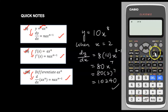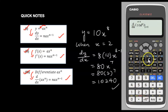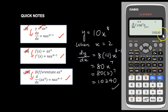Press Shift, then press the d/dx button. Key in 10X to the power 8 inside the first square bracket. Then press the right arrow twice to move to the small box at the bottom right, and key in 2 for X equals 2. Press equals and you get 10,240. This confirms your answer is 100% correct.